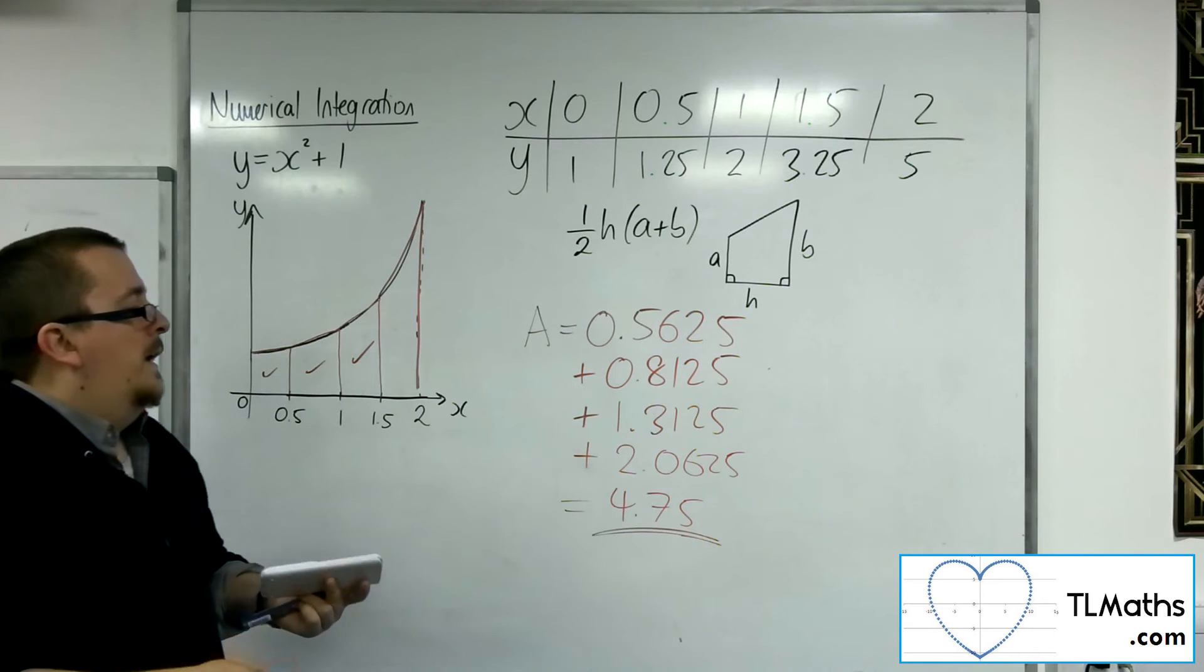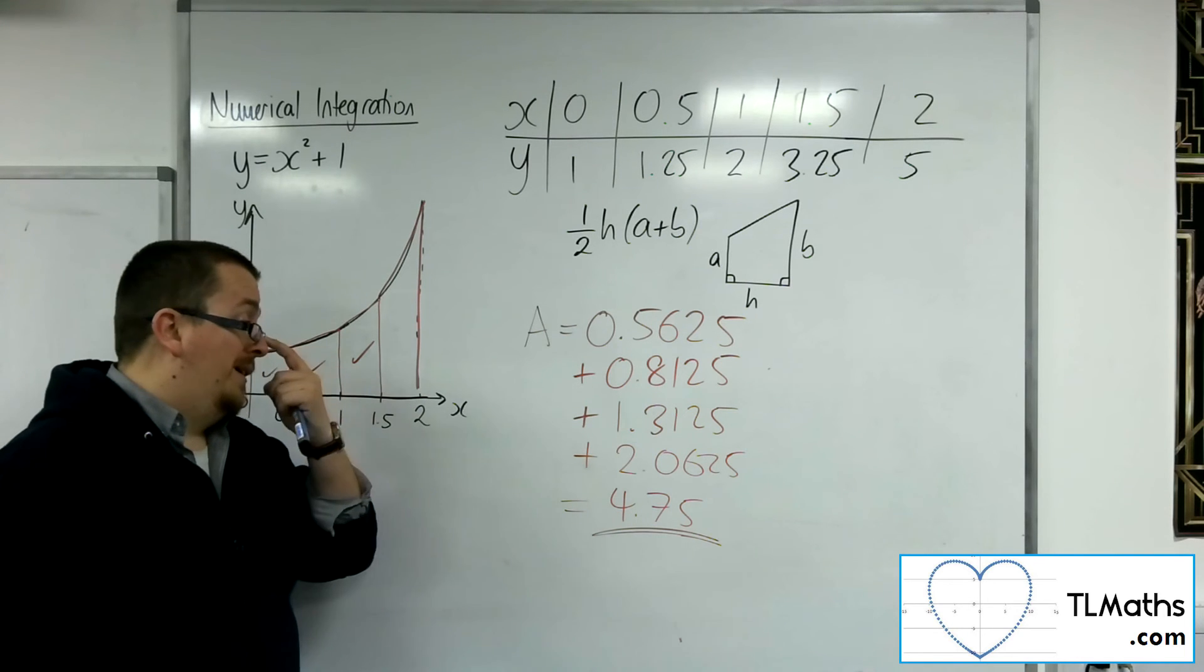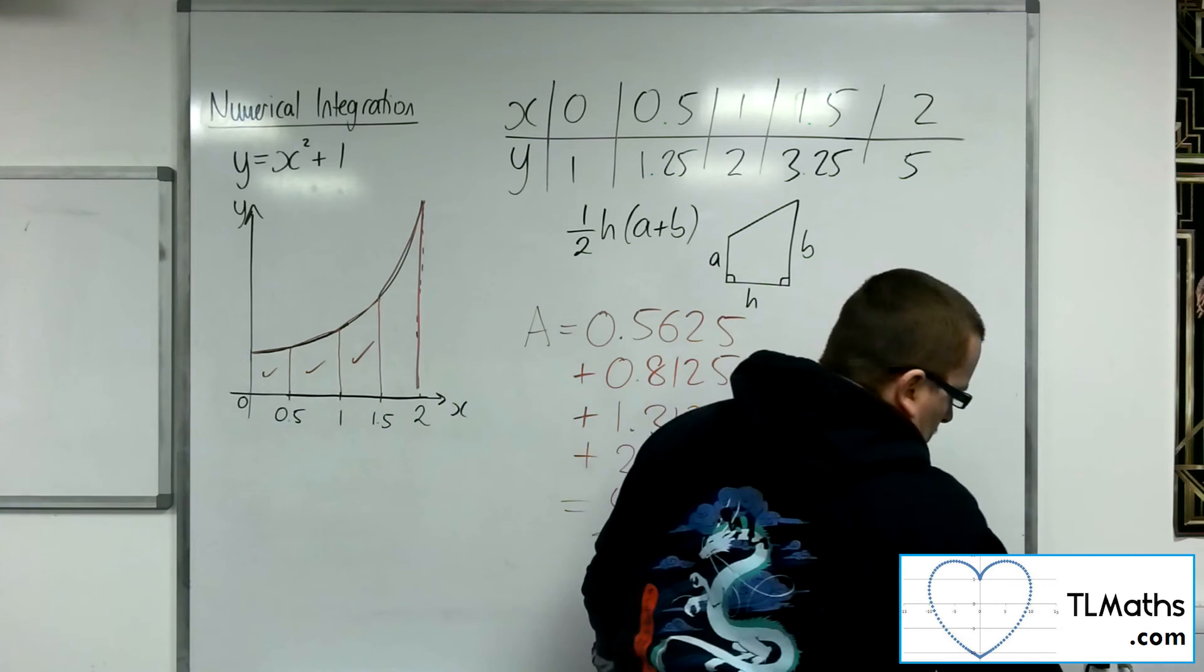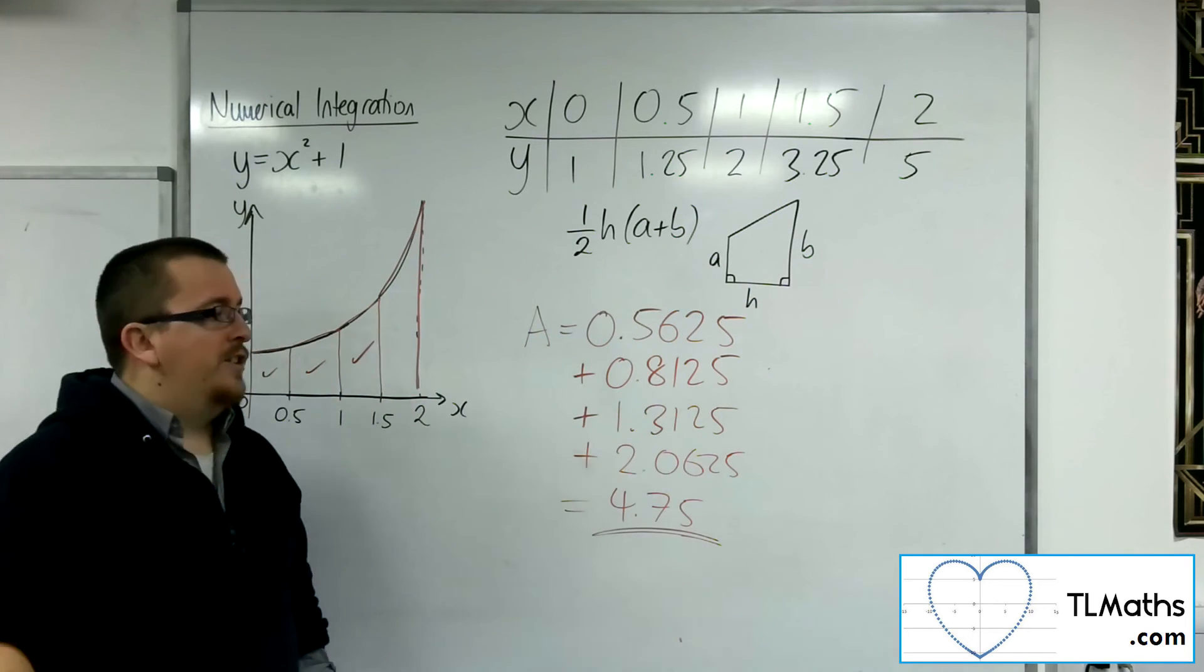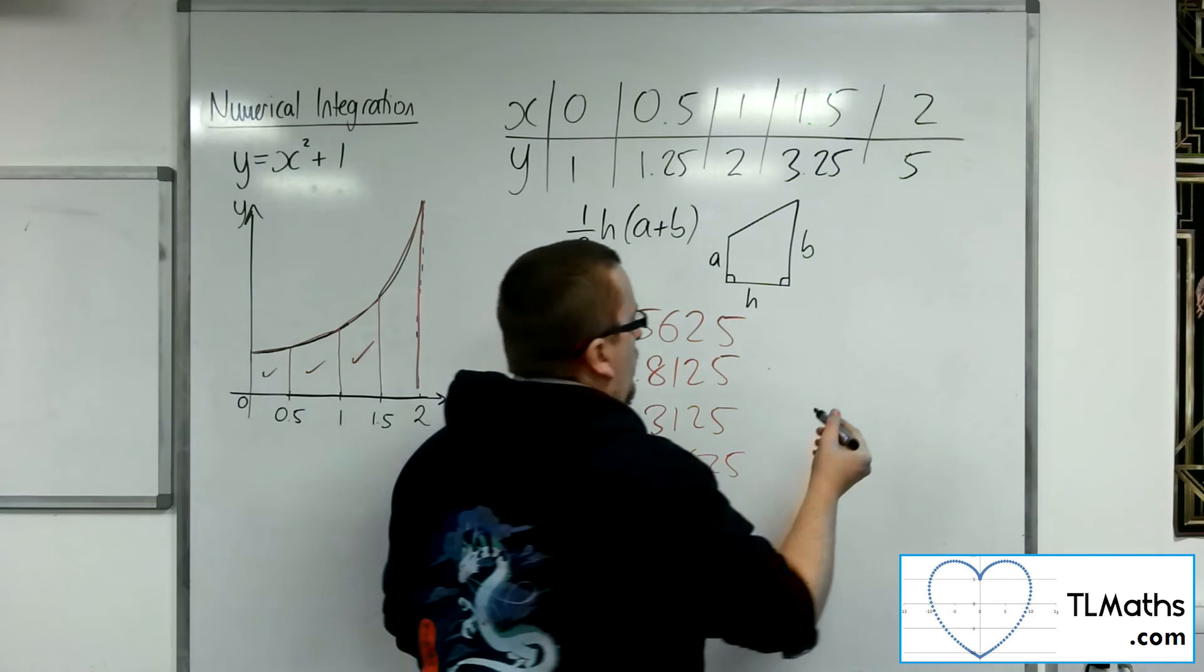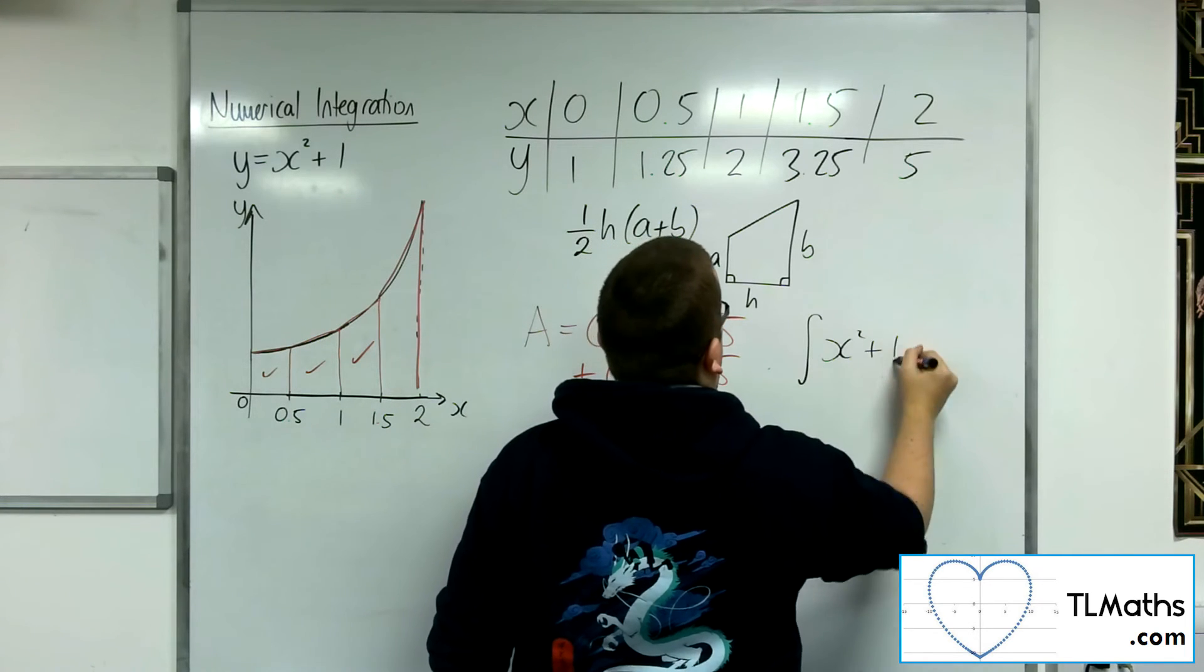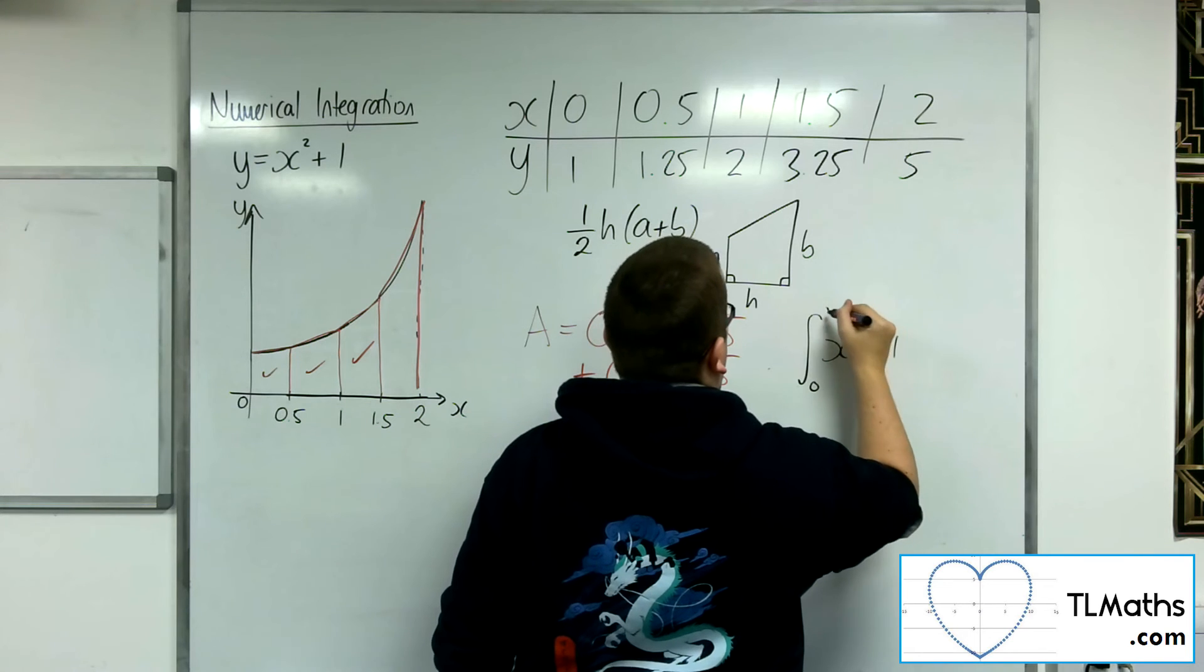So an even better estimate of that actual area. So let's, for argument's sake, just see how close it actually is. If we use integration, we're going to integrate x squared plus 1 between 0 and 2.